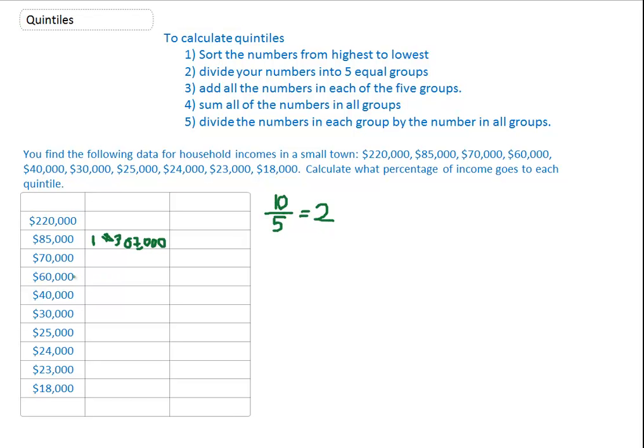Then our second quintile, 70 plus 60,000, is 130,000. And then 40 plus 30 is 70,000. And then we have 25,000 plus 24,000, 49,000 sound good? 23,000 plus 18,000, 41,000?